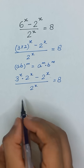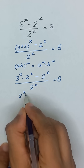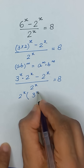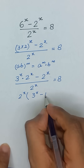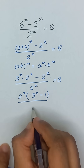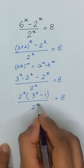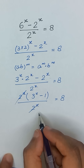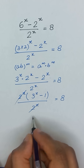In both terms we have 2 to the power x in common. So this divided by this: 3 to the power x times 2 to the power x divided by 2 to the power x will equal 3 to the power x, and 2 to the power x divided by 2 to the power x will equal 1. The 2 to the power x terms cancel out.